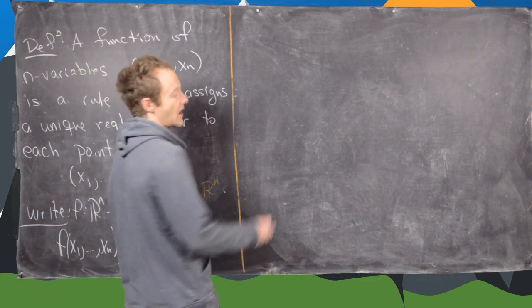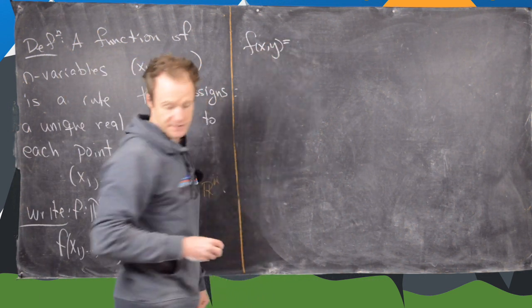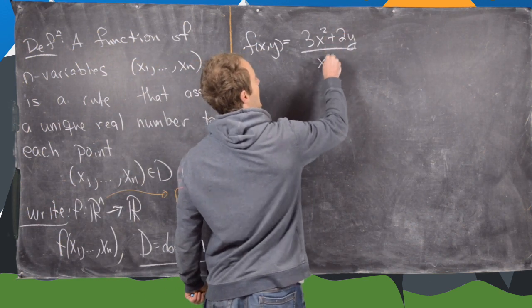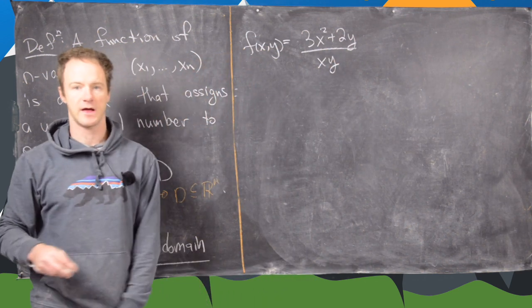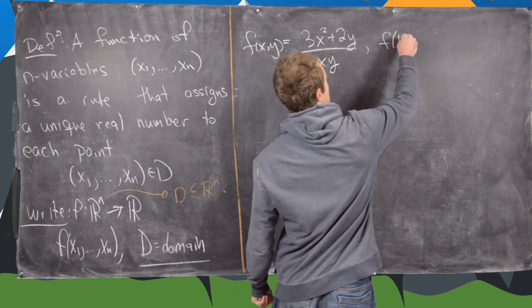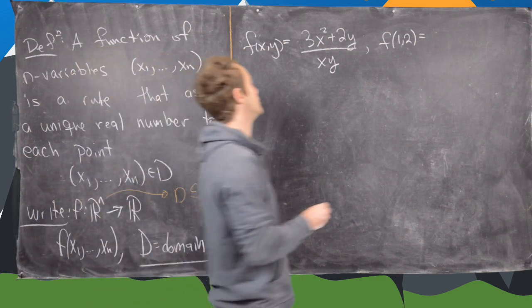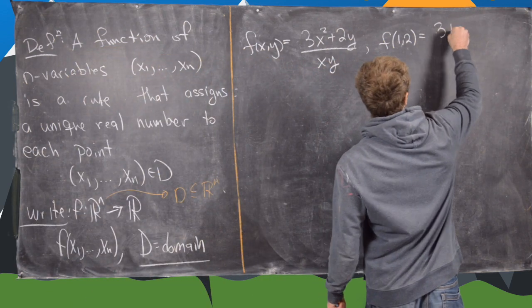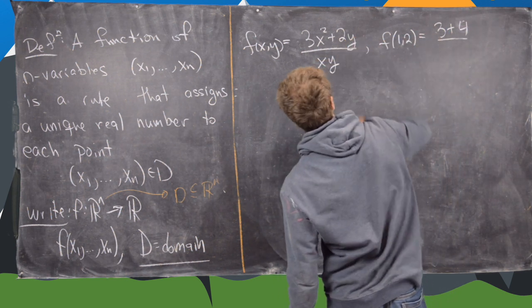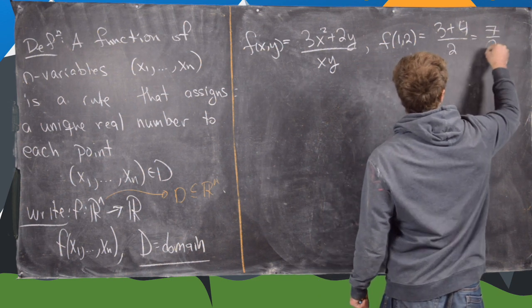The first one I want to look at is f of xy equals 3x squared plus 2y over xy. As a brief reminder, we can plug points into this. If we find f of 1, 2, that means we're replacing x with 1 and y with 2. So that's going to give us 3 plus 4, because 2 times 2 is 4, over 1 times 2 which is 2. So this is 7 over 2.